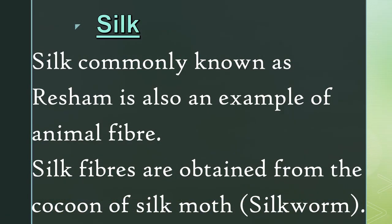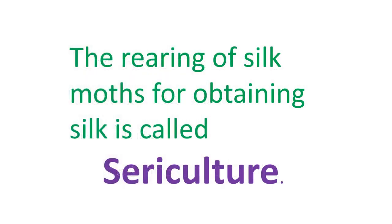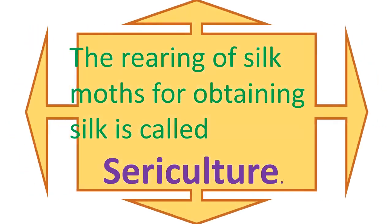Let us first know what is silk. Silk, commonly known as resham, is also an example of animal fiber. Silk fibers are obtained from the cocoon of the silk moth, commonly known as the silkworm. The rearing of silk moths for obtaining silk is called sericulture.